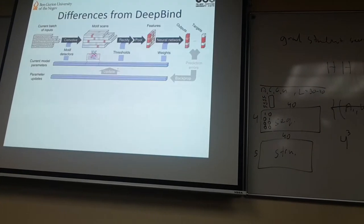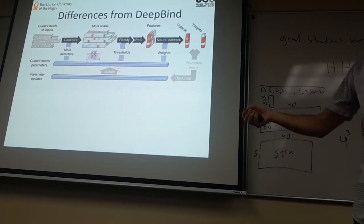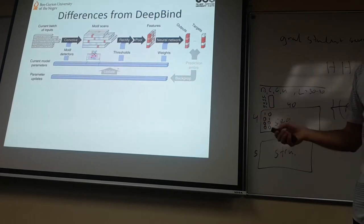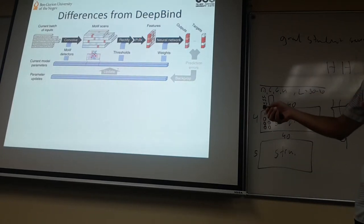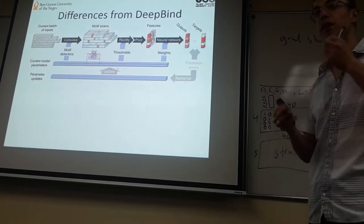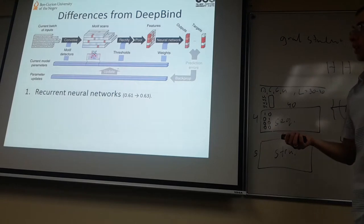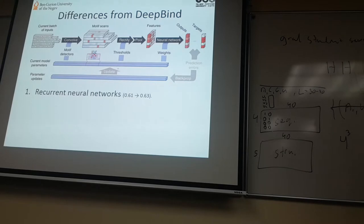Now talking about the differences from our competitors in the previous method that was published three years ago, D-Bind, which performed using an architecture that's very similar to our CNN. They first used the convolution over the set of sequences, then a rectification which is the ReLU, the max pooling, and the neural net which is the fully connected layer that we used, so a very similar architecture. What distinguishes their work from ours?